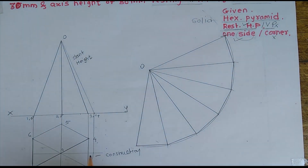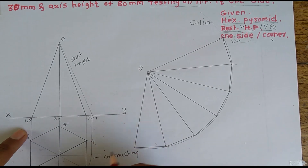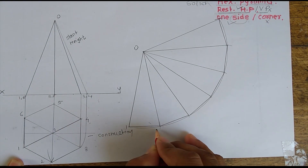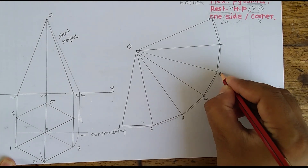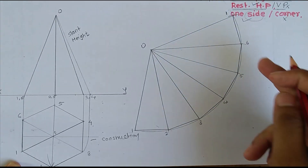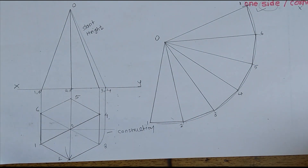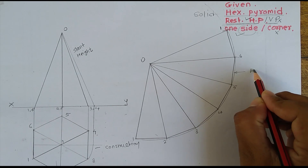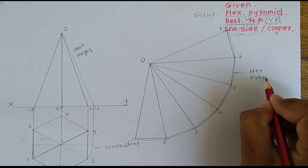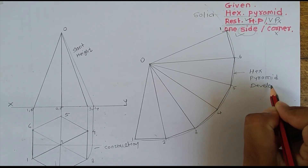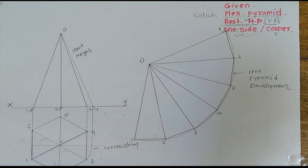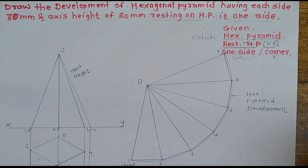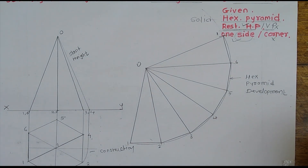I will join each sector apex with the arc. I will give naming here: this will be one, two, three, four, five, six, and the last will be again one, because this last point joins back to the first point. As per the problem statement, I have drawn the hexagonal pyramid development. Lastly, we label this as the hexagonal pyramid development. In that way, we have completed this problem on development of hexagonal pyramid. Thank you.